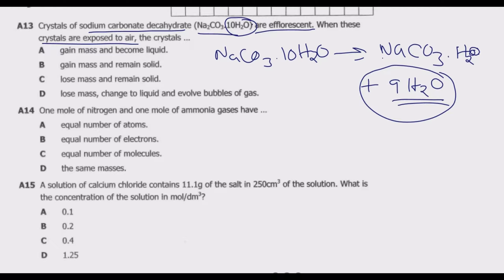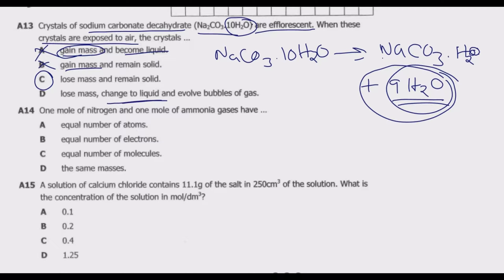Looking at the options: A — gains mass and becomes liquid — incorrect, it is losing water so it loses mass and does not become liquid. B — gains mass — incorrect. C — loses mass and remains solid — correct, it loses mass due to the water lost and remains solid. D — loses mass and changes to liquid — incorrect, it remains solid. So C is the correct answer.